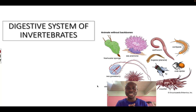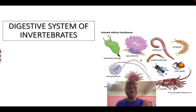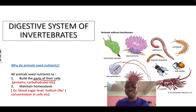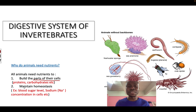Hello, welcome. In this video we're going to look at the digestive system of invertebrates — animals without backbone. Here are some examples on screen. There are two main reasons why animals need food or nutrients. Number one is that they need nutrients to build the different parts of their cells, like the cell wall, the cell membrane, and different organelles.